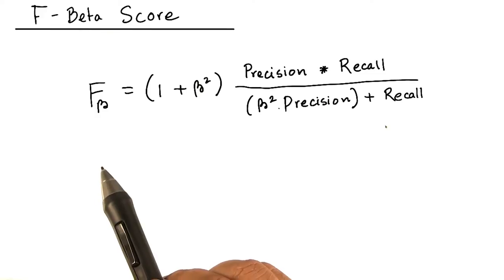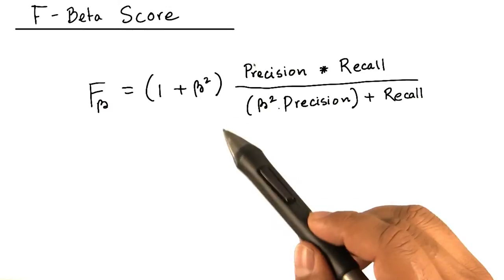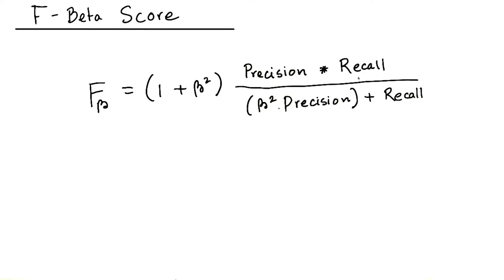The beta here can have various values depending on how much weight one wants to give to the precision value over the recall value.